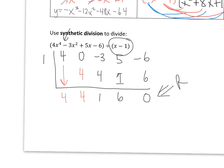Since the remainder is 0, this is the constant term, this is the linear term, quadratic, and cubic — these are the coefficients. So my answer is 4x cubed plus 4x squared plus x plus 6 with no remainder.